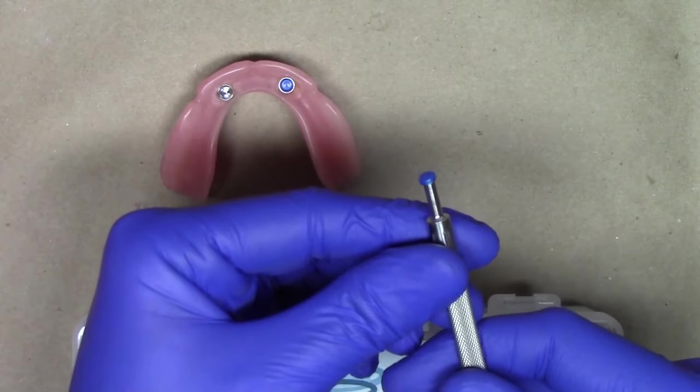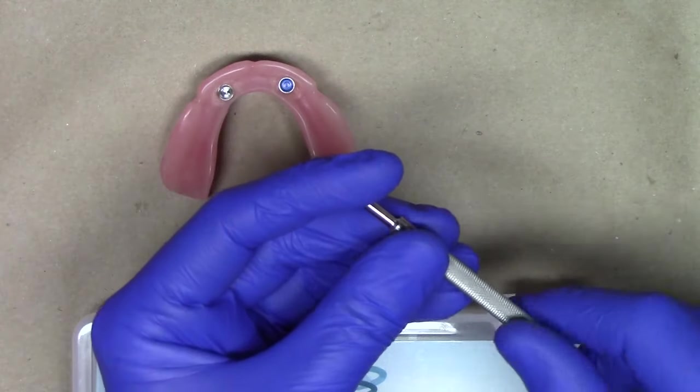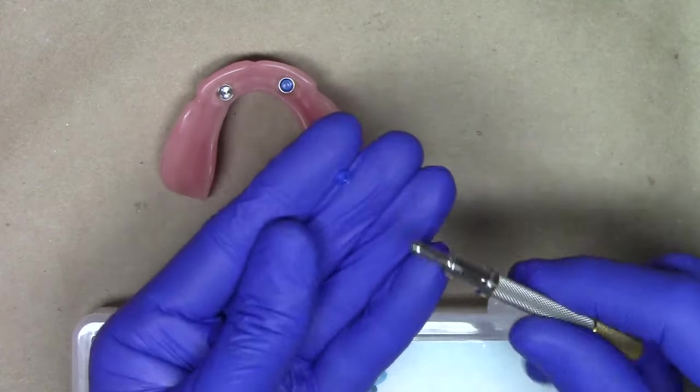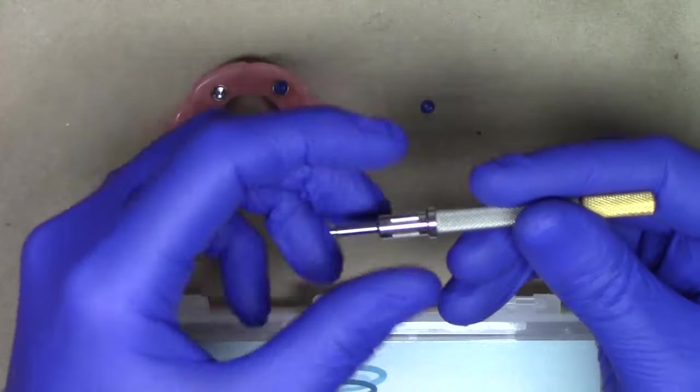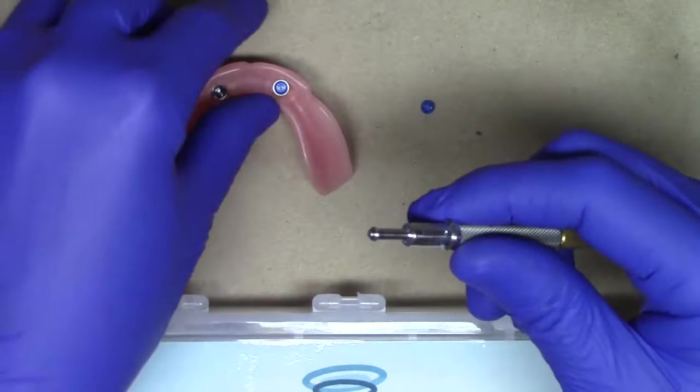As you see here, the nylon male will be retained inside of the Core Tool, and then I can go ahead and take this portion, turn it clockwise, and that male insert will pop right out into my fingers. I can repeat that by doing the same motion.